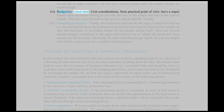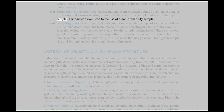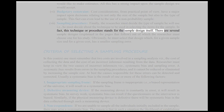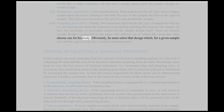Sixth, Budgetary Constraint: Cost considerations, from a practical point of view, have a major impact upon decisions relating to not only the size of the sample but also to the type of sample. This fact can even lead to the use of a non-probability sample. Seventh, Sampling Procedure: Finally, the researcher must decide the type of sample he will use, i.e. the technique to be used in selecting the items for the sample. In fact, this technique or procedure stands for the sample design itself. There are several sample designs out of which the researcher must choose one for his study. Obviously, he must select that design which, for a given sample size and for a given cost, has a smaller sampling error.